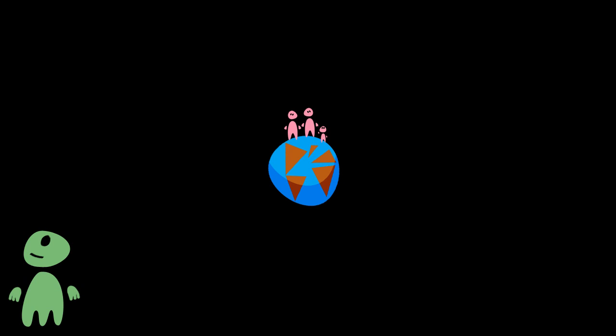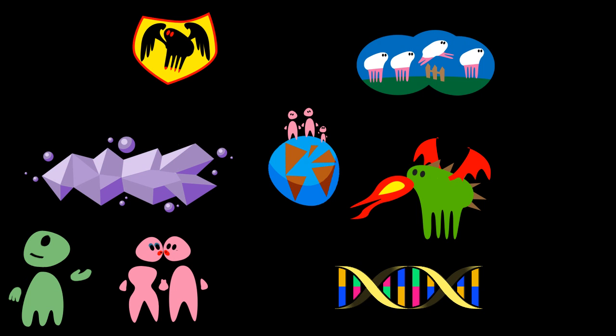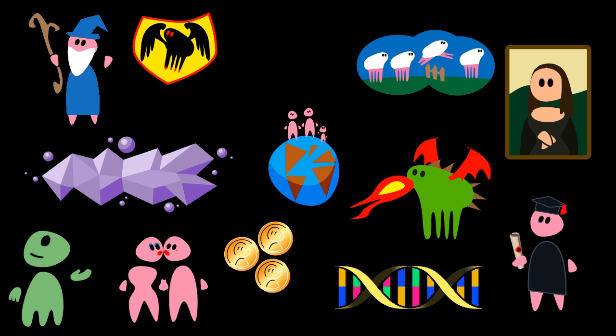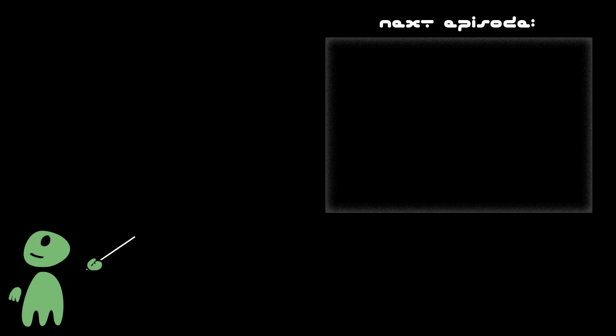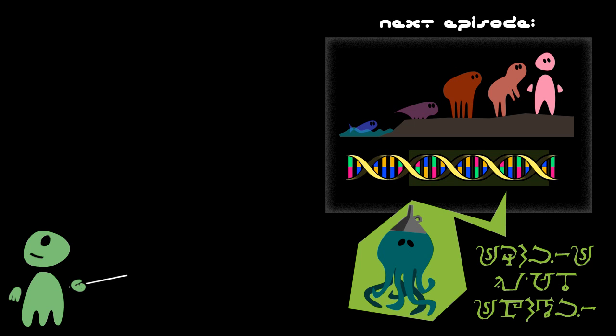This was the first episode of Earthlings 101. In forthcoming episodes, I will tell you more about evolution and society, but also about weird things like nations, myths, dreams, sex, magic, rituals, beauty, money, games and much more. Next time you will learn about evolution, genetics, and why the genetic code of earthlings contains the sentence 'squids are stupid' in an ancient Sagittarian dialect.